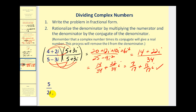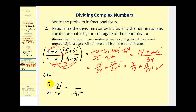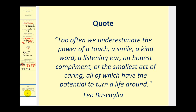On this last problem, our denominator is two i. You can think of two i as zero plus two i, so the conjugate would be zero minus two i, or just negative two i. Multiply both the numerator and denominator by negative two i. The denominator gives negative four i squared, and the numerator gives negative ten i. Since i squared is negative one, negative four times negative one is positive four. So we have negative ten i over four, which simplifies to negative five-halves i. I hope you found this video helpful. Thank you for watching.